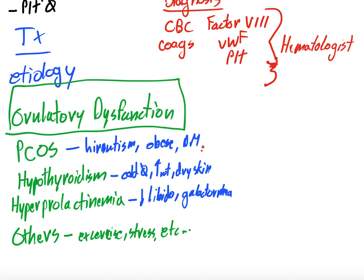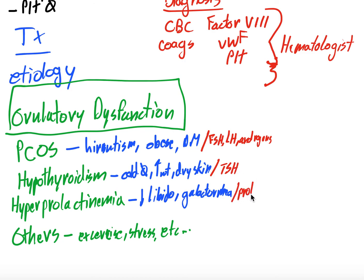For the workup of ovulatory dysfunction, you'll want FSH, LH, and androgens — particularly relevant for PCOS. You'll also want a thyroid screen for hypothyroidism and a prolactin level for hyperprolactinemia. The management approach varies significantly depending on the underlying diagnosis.